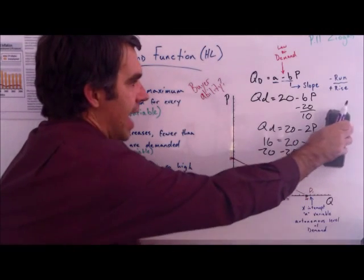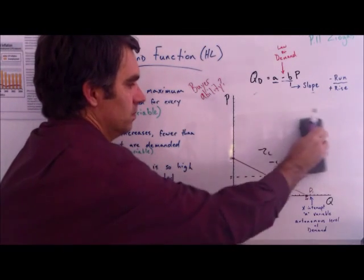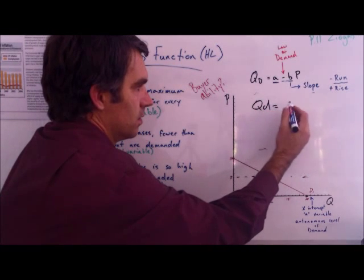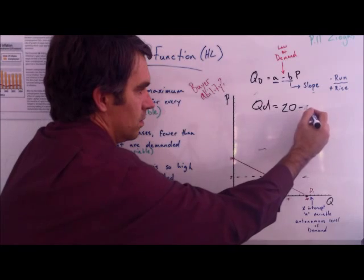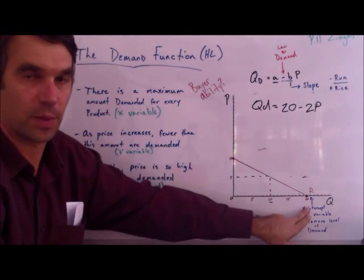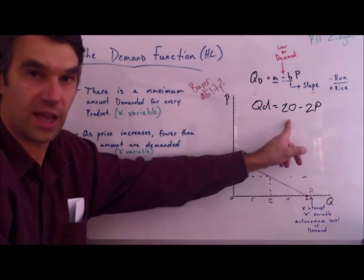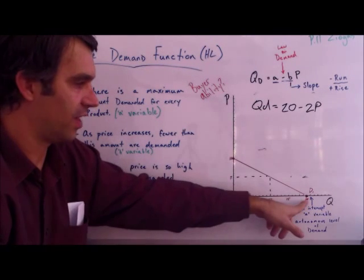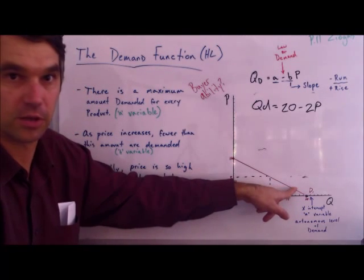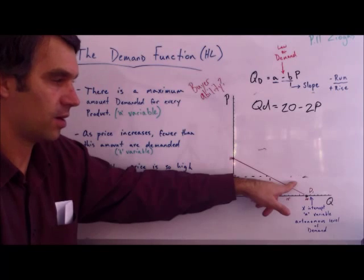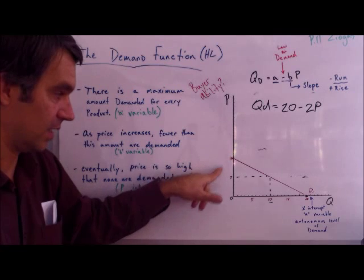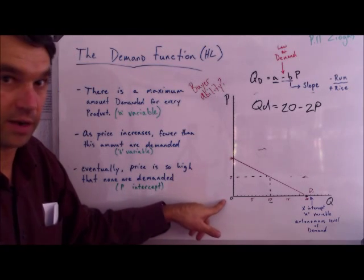To come back and reinvestigate our formula: the 'a' variable of 20 is the maximum amount that will ever be demanded of this product. From there, if I raise price by 1, quantity demanded goes down by 2. If I raise price by another 1, down by 2 again — in this same fashion — until we reach a price of 10 where quantity demanded equals 0.